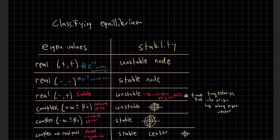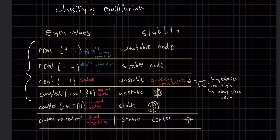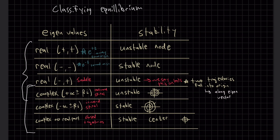In this video we're going to take a look at how we can classify equilibrium points for systems of differential equations. I have this table drawn out and there are two big breaks: complex and real eigenvalues. When we have real eigenvalues, if they're both positive it's an unstable node — things are going away from it. If we have two negatives it's a stable node — stuff's coming towards it. If we have a negative and a positive real eigenvalue, that's a saddle, because on one eigenline you have things coming towards it and on the other you have things going away.